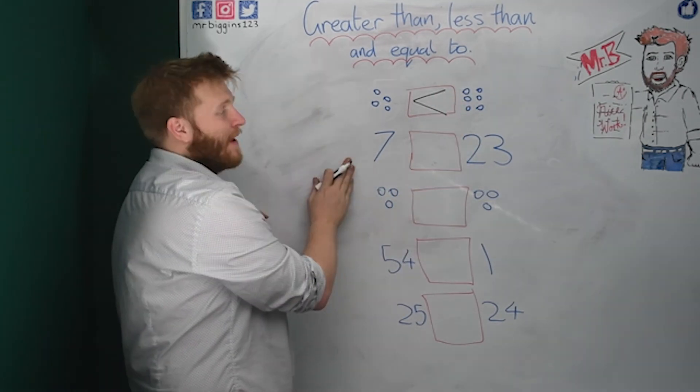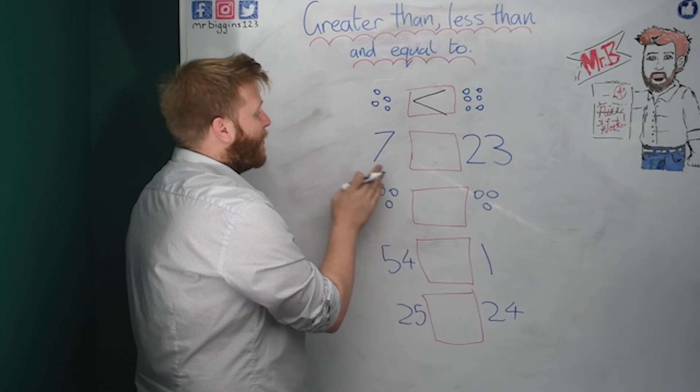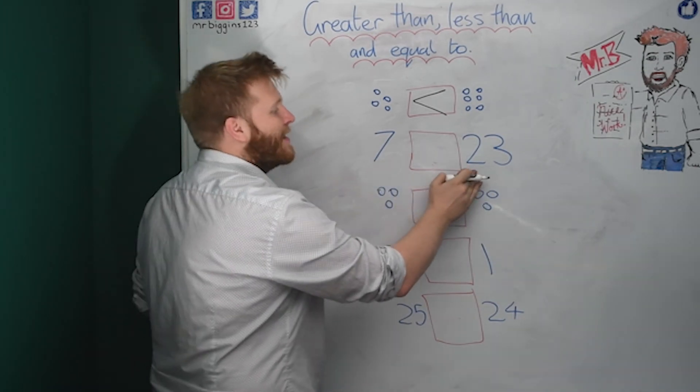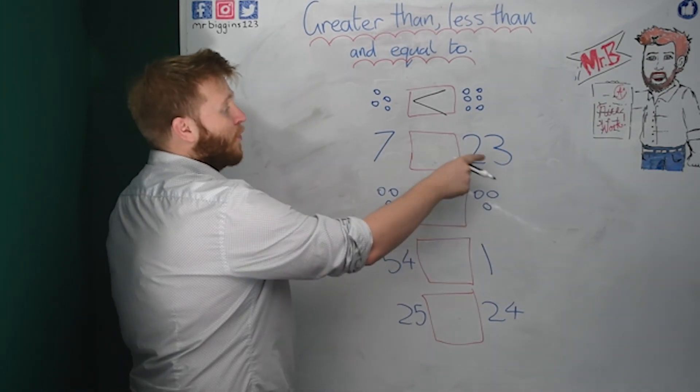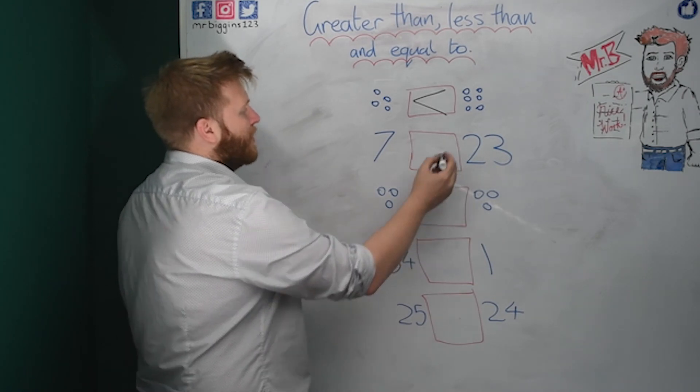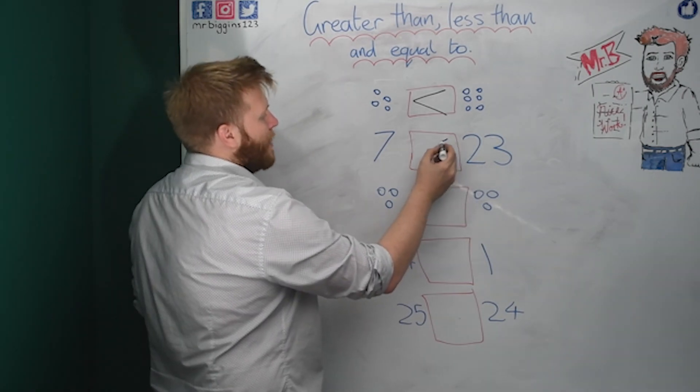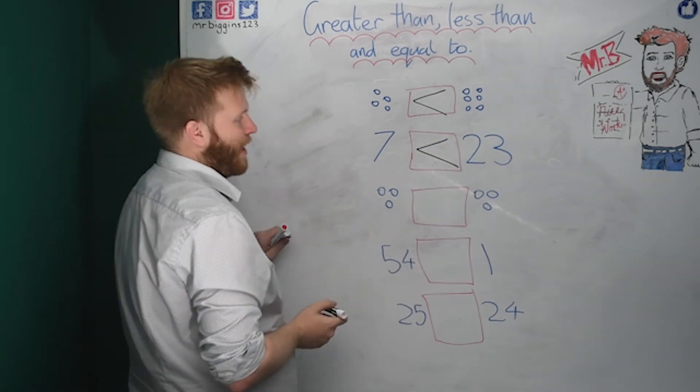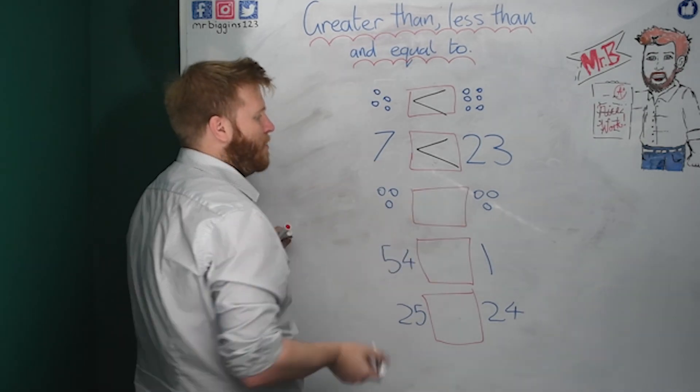This one, we've got seven here and twenty-three. Well, we've only got ones here and we've got tens and ones here. So this number's bigger. Twenty-three. So again, we would have the crocodile eating the bigger number.